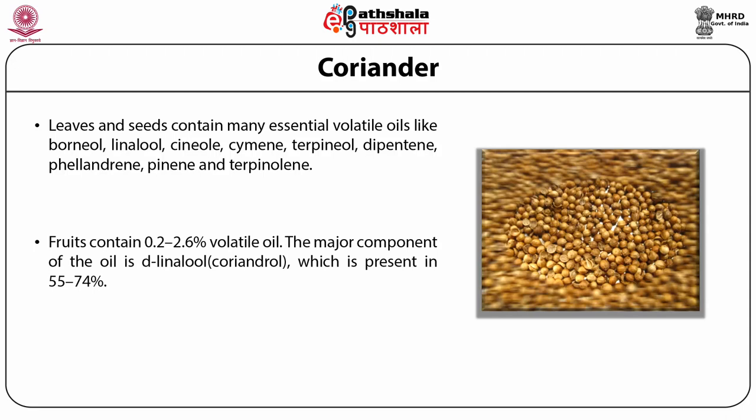Fruits contain fiber about 23 to 36%, carbohydrates about 20%, fatty oil about 3 to 28%, proteins about 11 to 17%, and 0.2 to 2.6% volatile oil. Other constituents present in fruits include up to 26% fats made up of glycerides, primarily of oleic, petrosinic, and linoleic acids, a small amount of unsaponifiable matter containing beta-sitosterol and alpha-sitosterol, tricontanol, tricosanol, etc. Proteins about 11 to 17%, about 1% starch, and 20% sugars. Coumarins, flavonoid glycosides, and rutin.